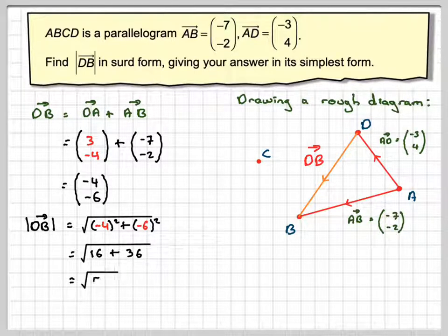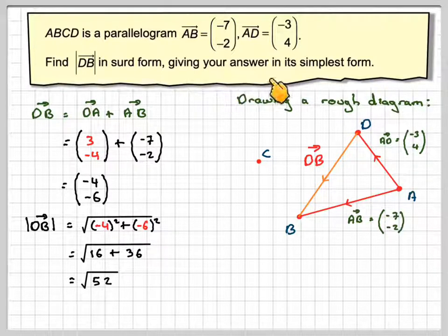Okay, that gives me the square root of 52. Now we're asked to give that in surd form, but we need to give it in the simplest form. Now we realize the first square number that goes into that is 4.